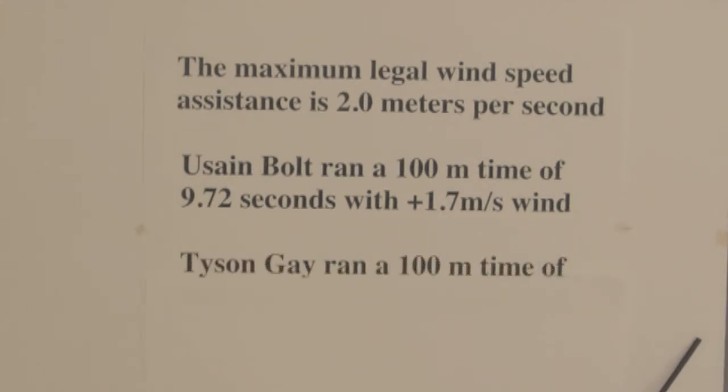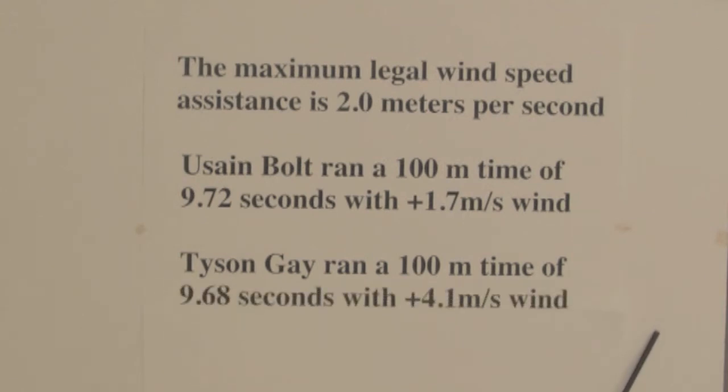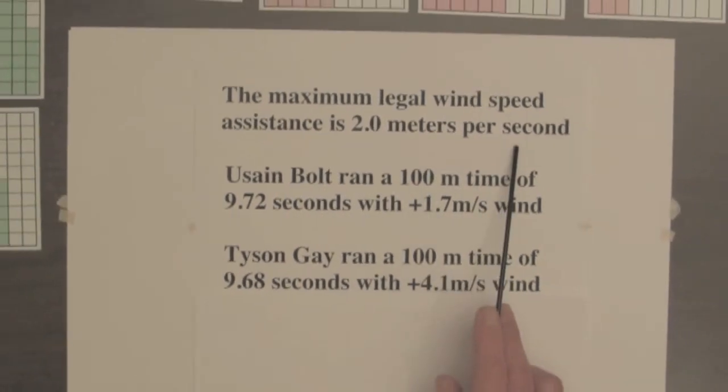About a month later, Tyson Gray ran a 100 meter time of 9.68 seconds with a plus 4.1 meters per second wind. Now notice that his time, 9.68, is less than 9.72 by four hundredths of a second. But Tyson Gray did not establish a world record because his wind speed, 4.1 meters per second, was greater than the legal limit of 2.0 meters per second.